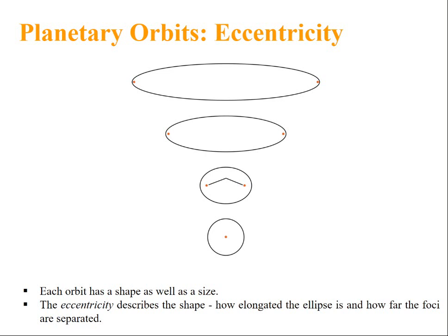Now let us talk about eccentricity. Eccentricity describes the shape of the ellipse. Each orbit has a shape as well as a size. Eccentricity is a method to describe the shape, how elongated the ellipse is and how far the foci are separated. Eccentricity is defined by the formula E equals C by A, where A is semi-major axis and C is the distance between the center and one of the foci.